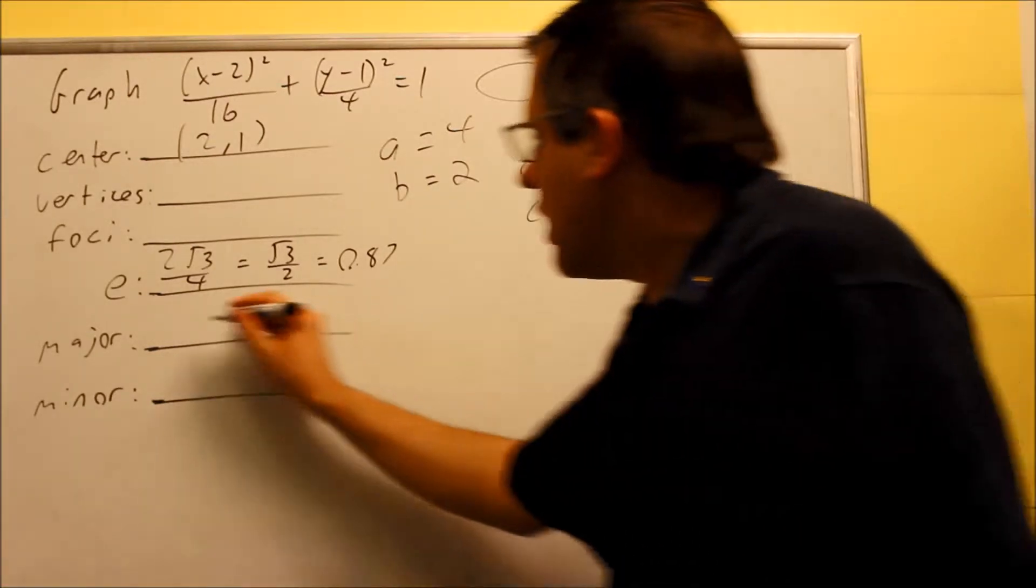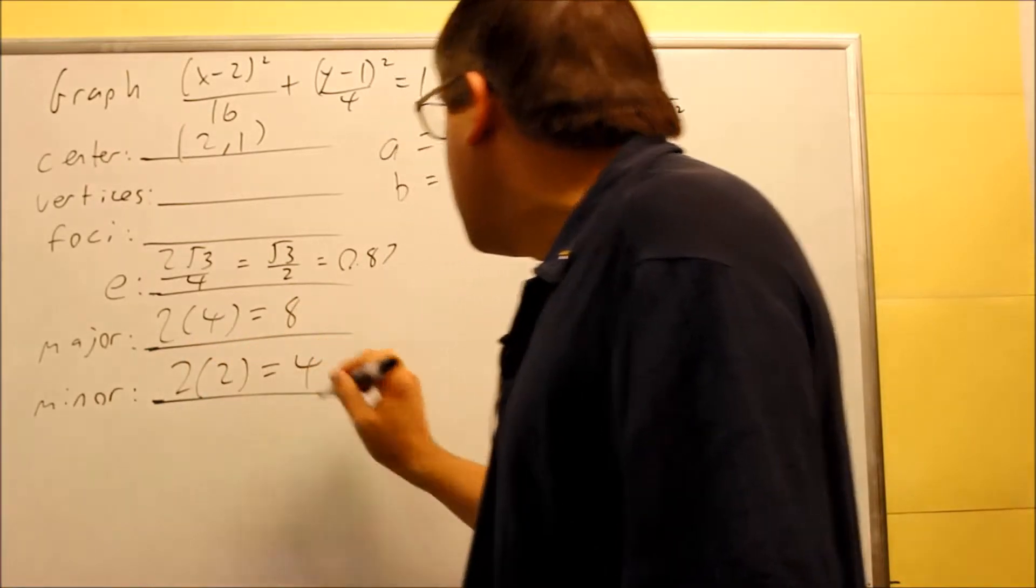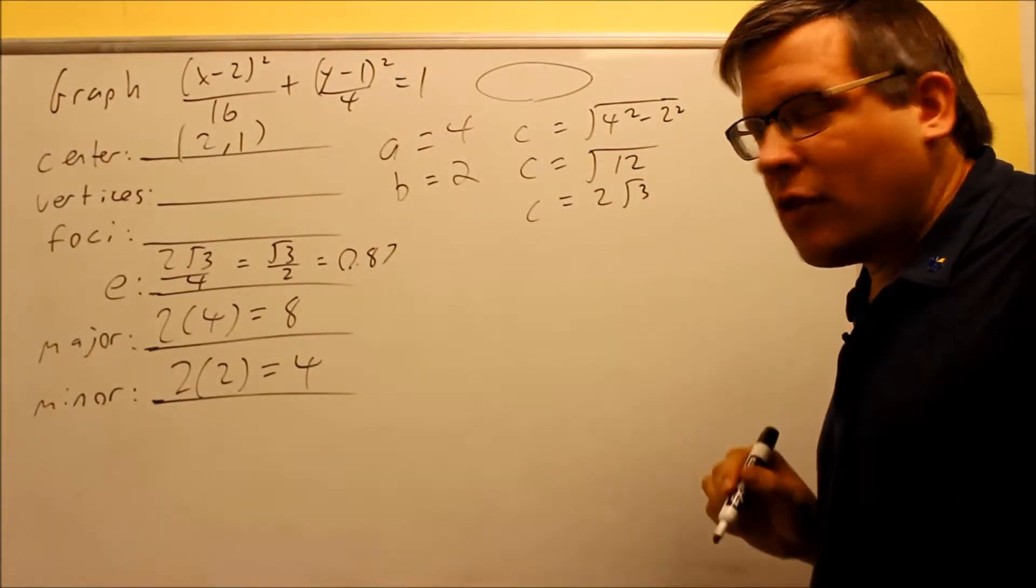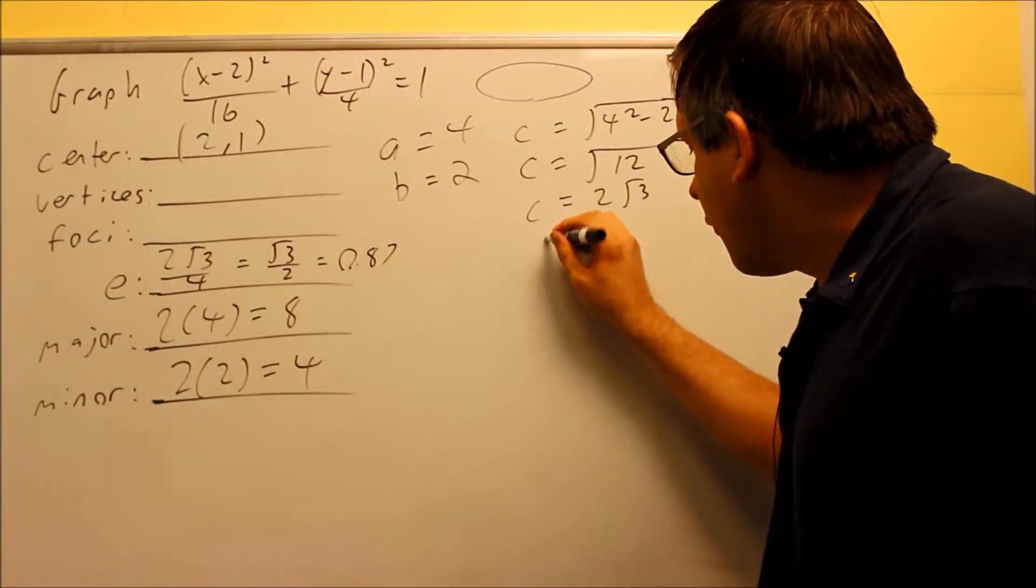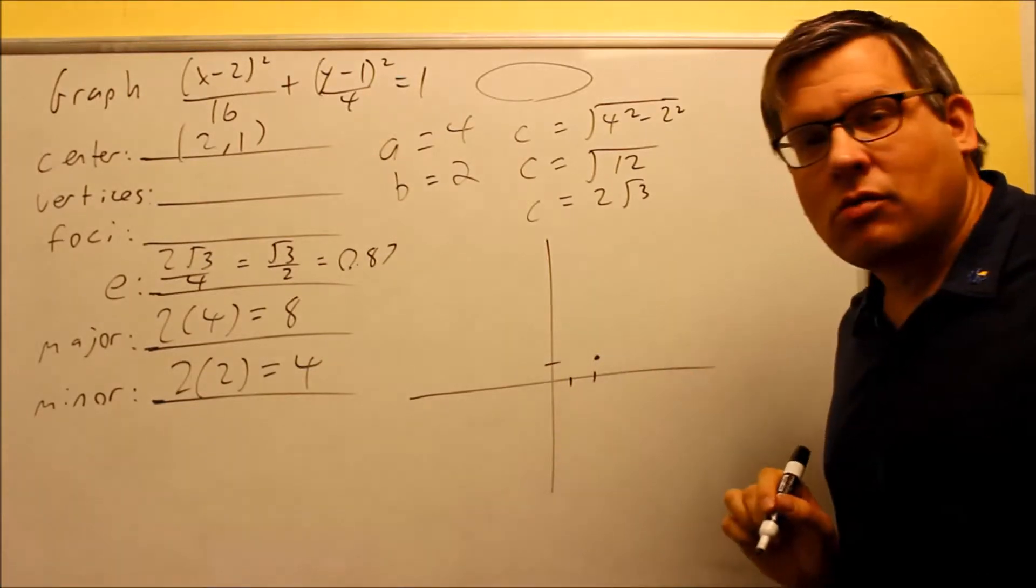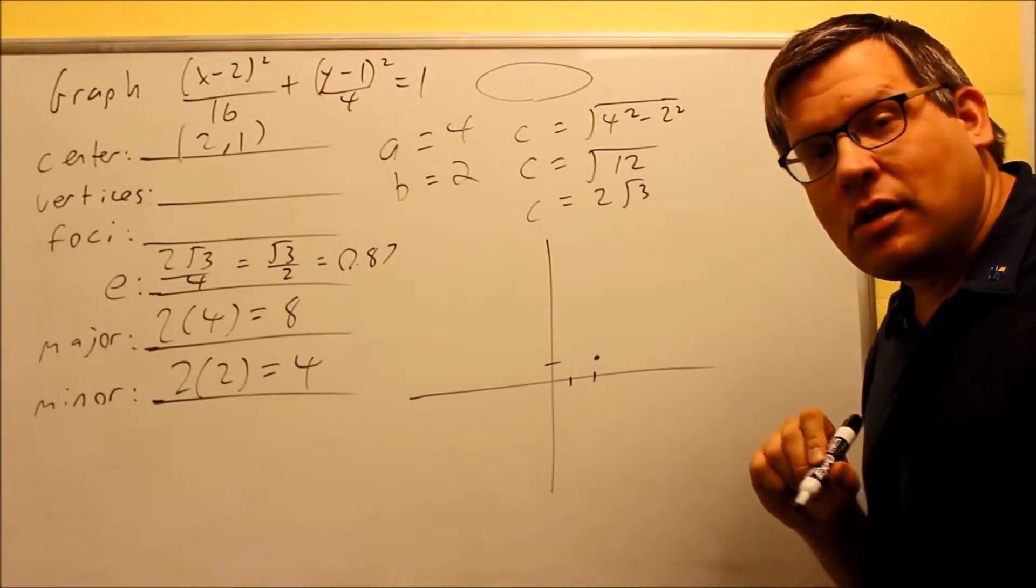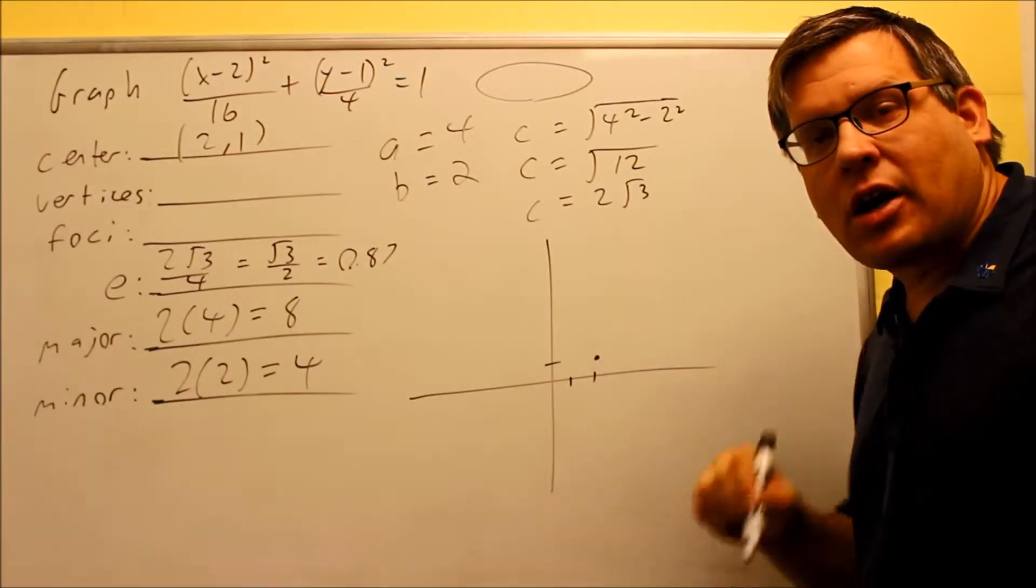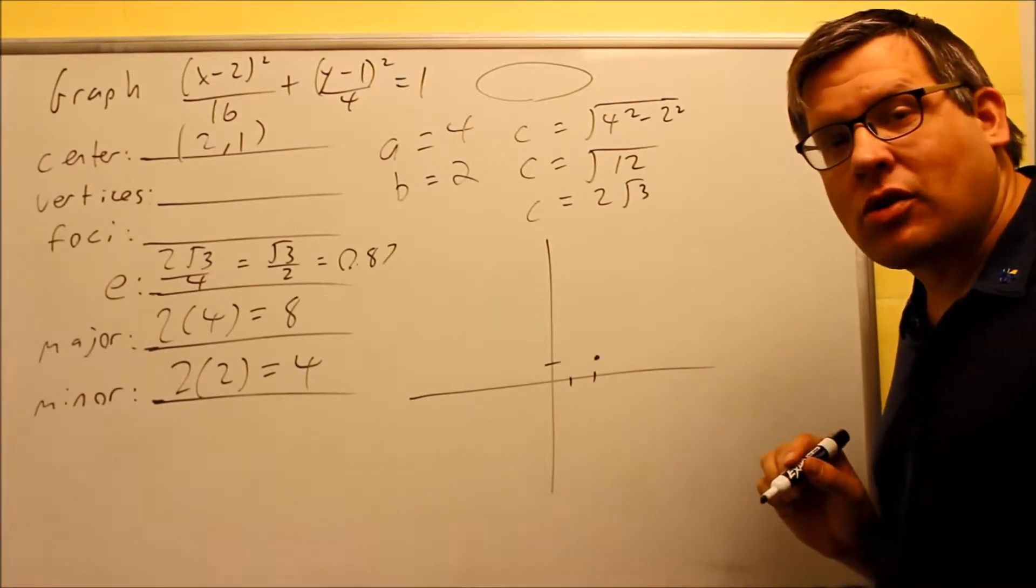Major axis is 2 times a, 2 times 4 is 8. Minor is 2 times b, 2 times 2 is 4, so we have that information. Now we just want to find the vertices and the foci. We'll do that from the graph. When you're graphing something that's not centered at the origin, what you're going to do first is plot the center. So here's the center, (2,1). We start from that. So all the measurements that we do with our a and b and c, they all come from the center. So I'm going to do this problem—again, I'm not going to be using formulas like I have in the notes. Instead of using the formulas, I'm actually just going to read the values directly off of the graph.